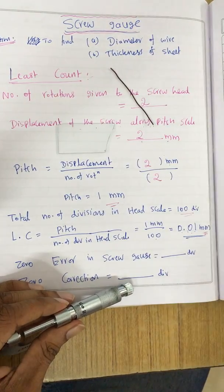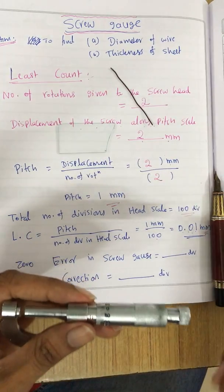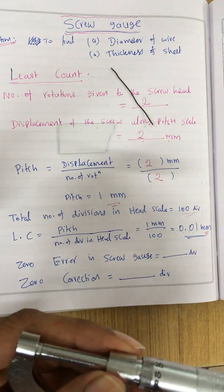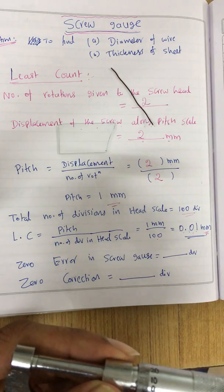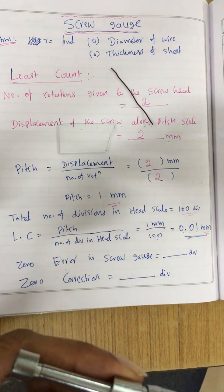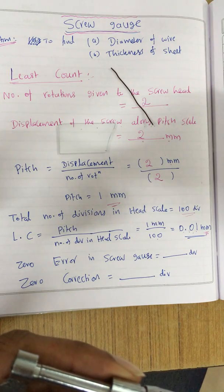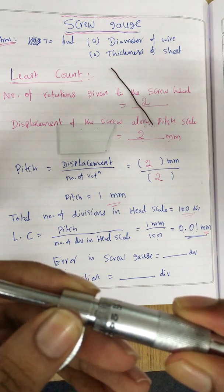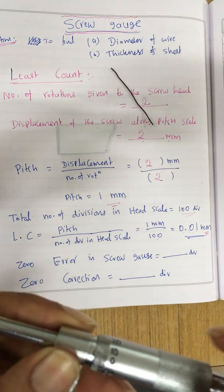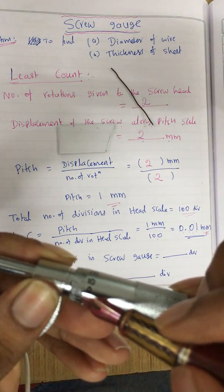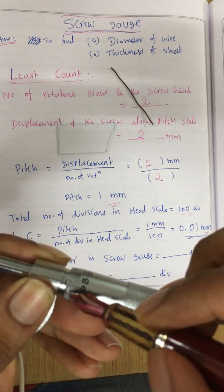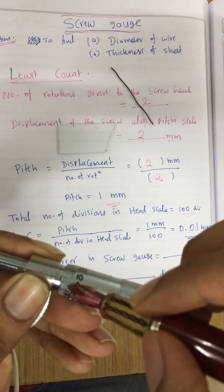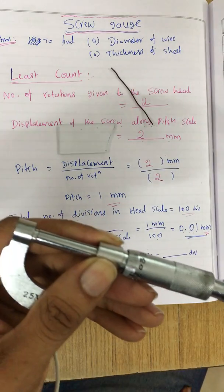Zero error is one of the instrumental errors. When we tighten the screw gauge, ideally the zero of the head scale should coincide with the pitch scale horizontal line. Unfortunately, when I tighten it the zero is shifted above by some divisions. I wanted the zero to be exactly coincided, but it is not — it is shifted up. So now I have to find out how many divisions are there above the P scale. Zero is here and there are 5 divisions above the P scale.